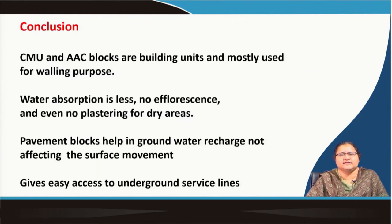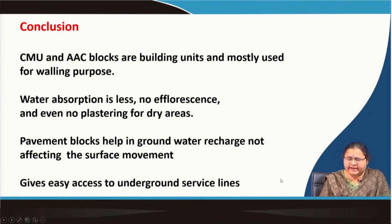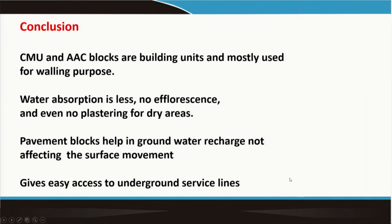We can conclude that although CMUs and AAC blocks are very similar to brick, they provide faster construction. The joining is simple and easy, mostly used for walling. There is no efflorescence and no plastering required for dry areas. Pavement blocks on the other hand help in groundwater recharge, do not affect surface movement, give easy access to underground service lines, and at the same time give a dressed flooring for parking, cycling, human movement, and public spaces. We now move to the precast panels which have not been much in use in our country context.